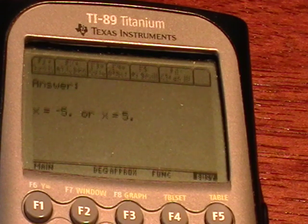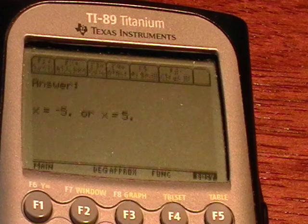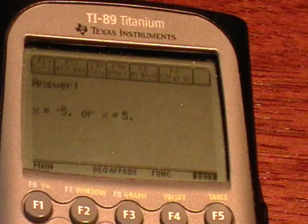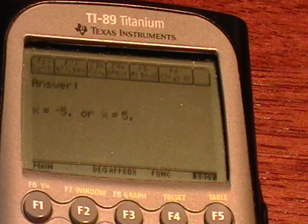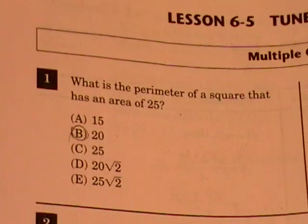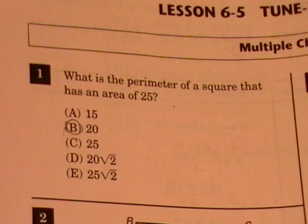The perimeter of a square is just the value for each side multiplied by 4. So 5 times 4 is 20, and that is option B.